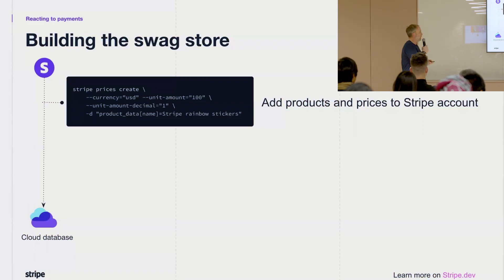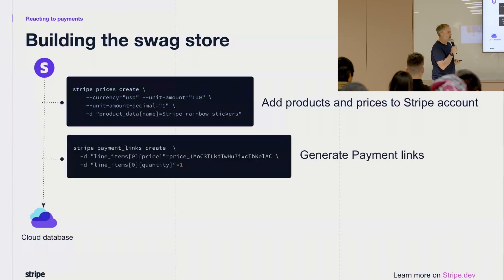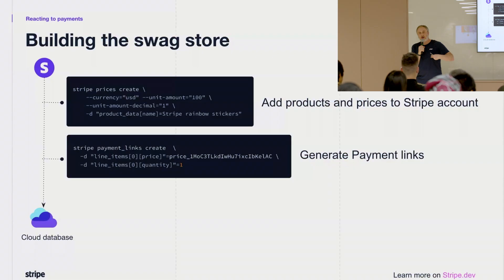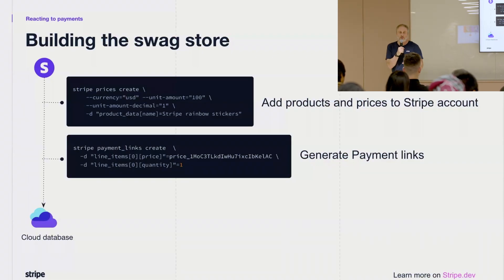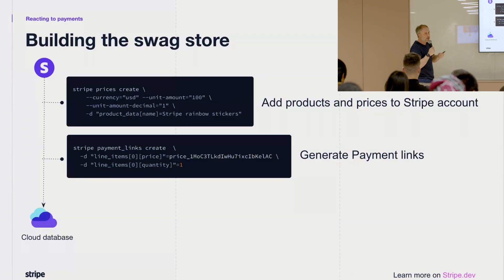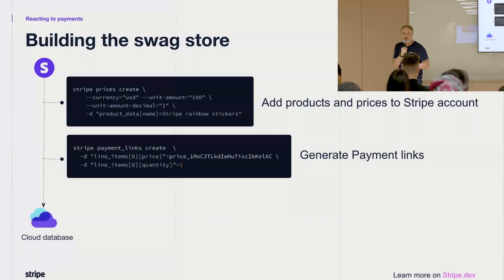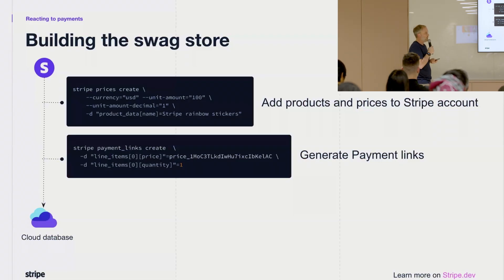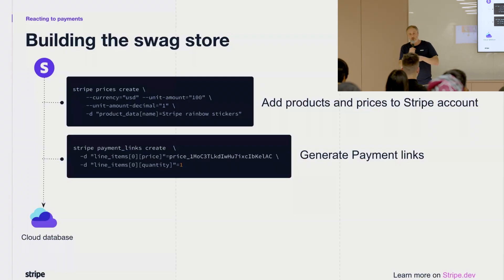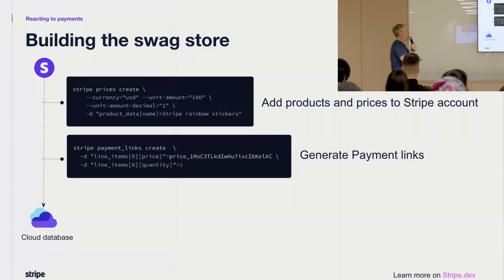We added products, then the next thing we added was payment links. Payment links are the simplest, quickest, easiest way to get going on Stripe. You generate a price ID and a payment link — it's like a landing page where you can select various payment methods: Apple Pay, Google Pay, credit card. By selecting a checkbox, your users can choose their most comfortable and quickest payment method, take the payment, and you're up and running very quickly indeed.